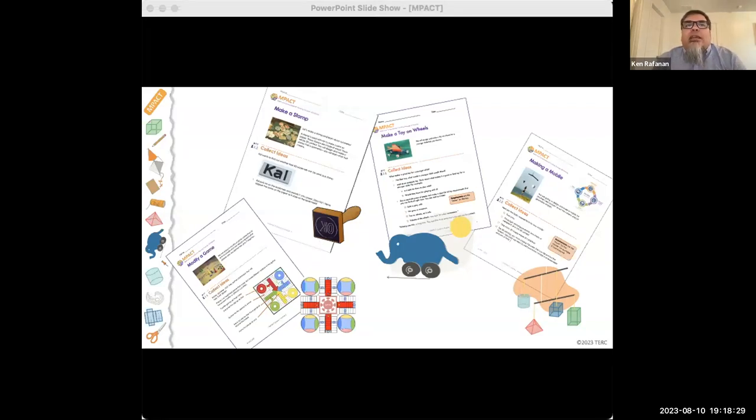And then in fifth grade, as Jennifer just talked about, we have the Making a Toy on Wheels. In sixth grade, they take on a project where they're making a mobile. So there's a ton of work around surface area and volume and things like nets, which is a sixth grade standard.